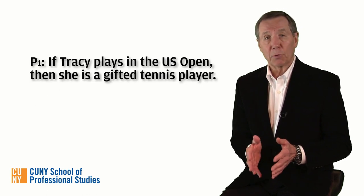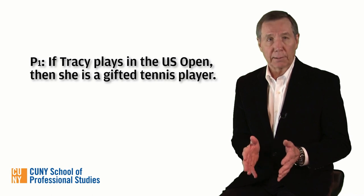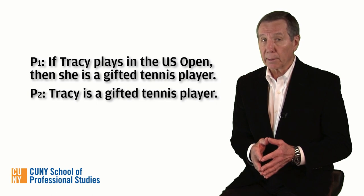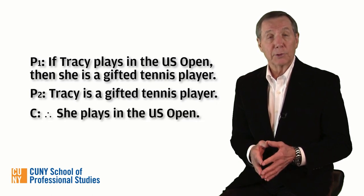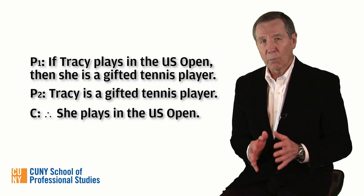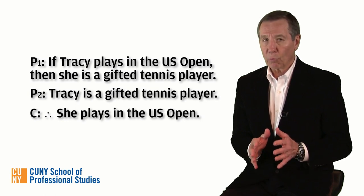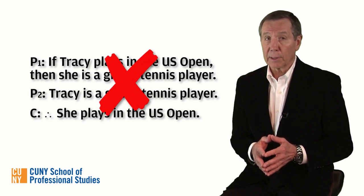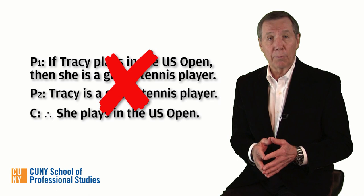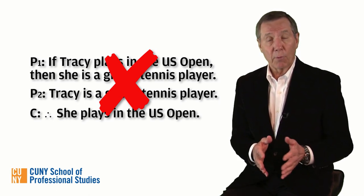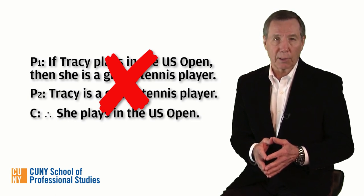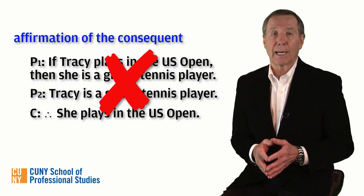Fleshed out, it reads like this. Premise 1: if Tracy plays in the U.S. Open, then she's a gifted tennis player. Premise 2: Tracy is a gifted tennis player. Conclusion: therefore she plays in the U.S. Open. Wait a minute — there's something wrong here. Just because Tracy is a gifted tennis player, that does not entail that she plays in the U.S. Open. Indeed, very few gifted tennis players achieve that distinction. This formal fallacy is so notorious it's earned a name: it's known as affirmation of the consequent. Beware.